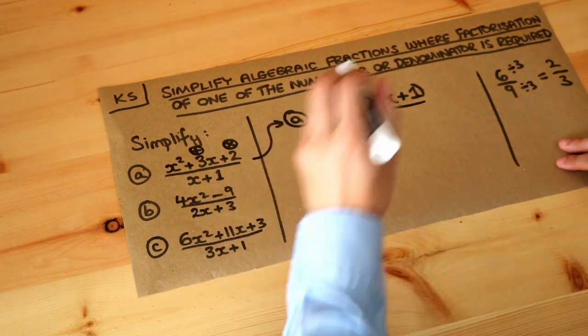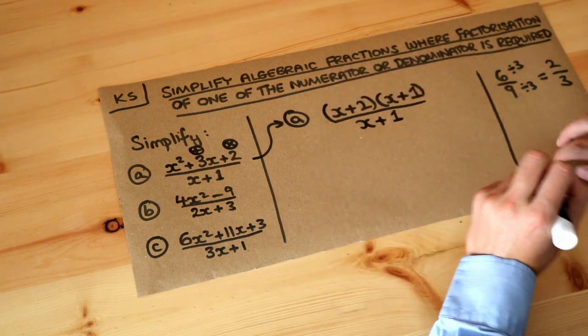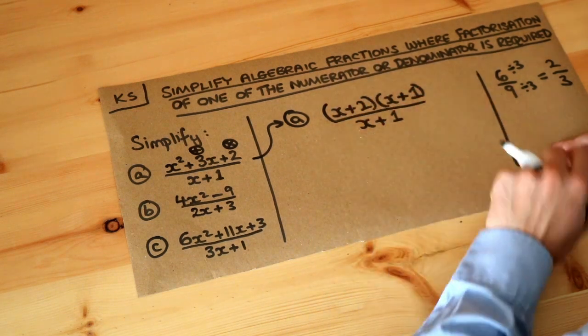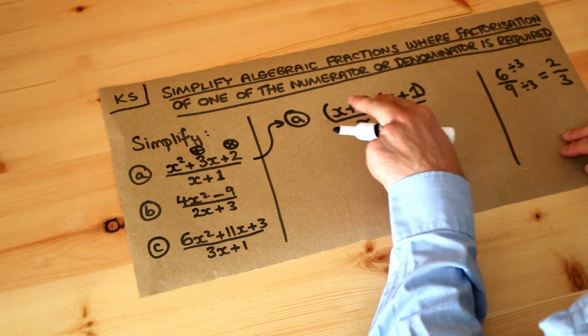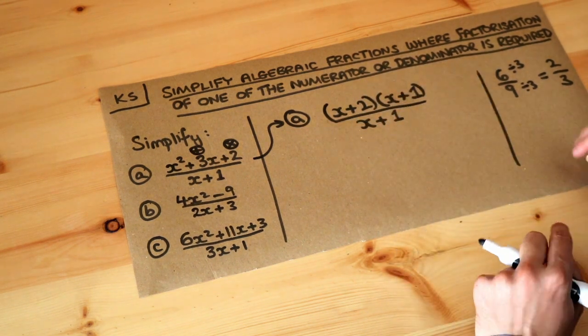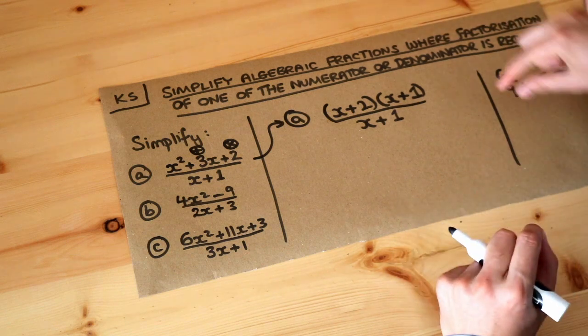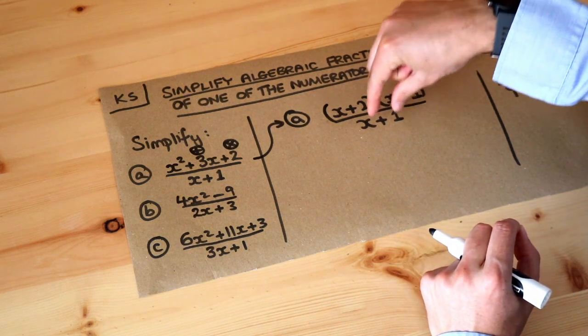Now the bottom, there's nothing to factorize, it's just x plus 1. But can you see that because we've now factorized the numerator, there is something we can divide by? This is x plus 2 multiplied by x plus 1, and can we see that we've got a common factor of x plus 1 at the top and the bottom.